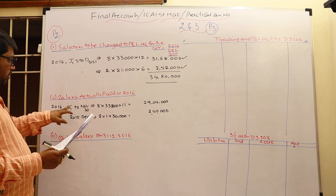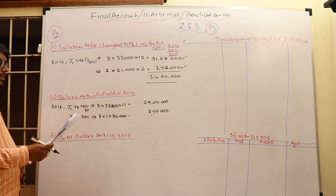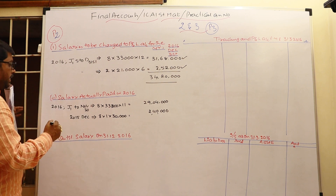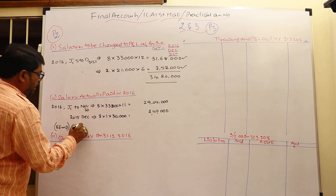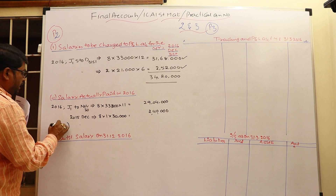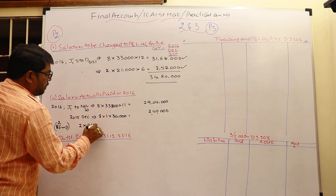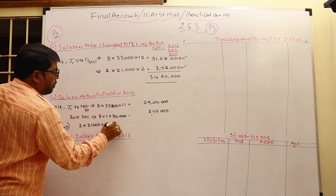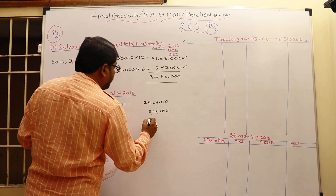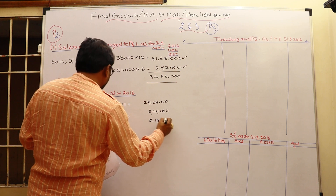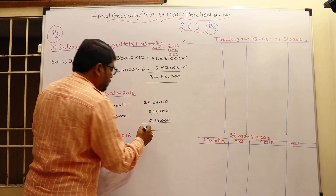From January to November, 2016 salaries are paid and December salary is outstanding — it will be paid in the next year. For the two trainees, ₹21,000 per month, only five months are paid and one month is outstanding. That gives 2 × 5 × ₹21,000 = ₹2,10,000. Therefore, total salary paid during 2016 is ₹33,54,000.